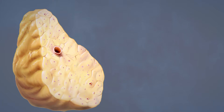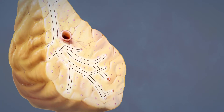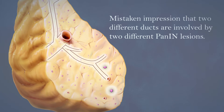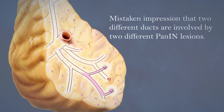Surviving PanINs will extend along the three-dimensional branching duct system. When they do, two ducts of the same contiguous PanIN lesion can appear in a two-dimensional cross-section of the pancreas. This can lead to the mistaken impression that two different ducts are involved by two different PanIN lesions.